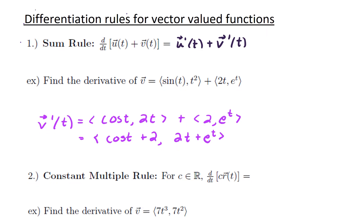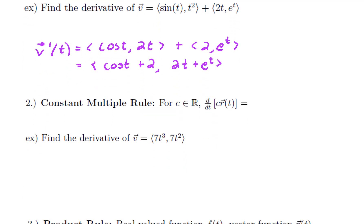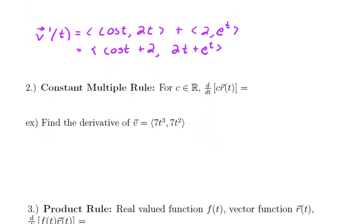Next, let's take a look at the constant multiple rule. Here c is a real scalar — a real number — and the derivative, well, constants pull out in front, so it's just c times the derivative r′(t). As an example, consider the vector-valued function with two components: 7t³ in the first and 7t² in the second component.